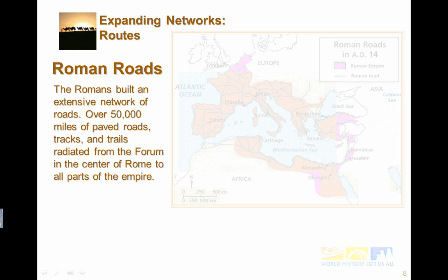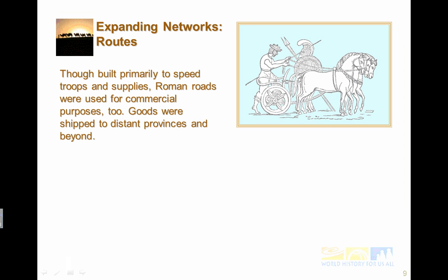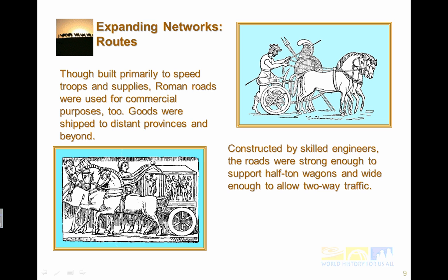The Romans built extensive networks of roads — over 50,000 miles of paved roads, tracks, and trails radiated from the forum at the center of Rome to all parts of the empire. Though they were built primarily to speed troops and supplies, Roman roads were used for commercial purposes too. Goods were shipped to distant provinces and beyond. They were constructed by skilled engineers, strong enough to support half-ton wagons and wide enough for traffic going both ways.